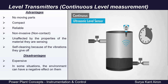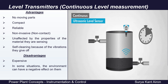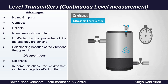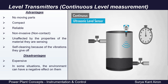That was all about level switches — we discussed four types: float type, conductivity type, optical, and tuning fork (vibrating fork). Now we come to continuous level measurements, which are level transmitters. The first type of level transmitter is the ultrasonic level transmitter, which works by emitting and receiving ultrasonic waves. It is mounted on top of the tank.